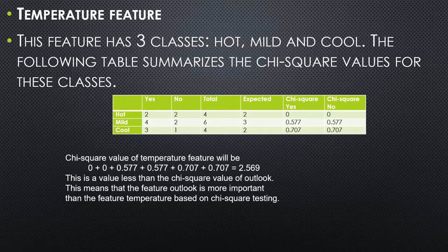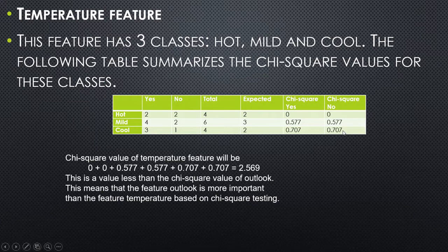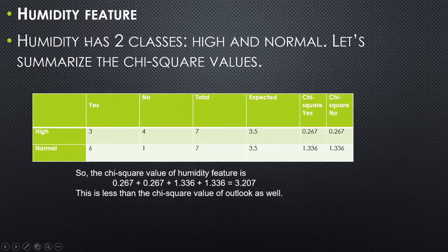Next, we compute the chi-square for the temperature feature, which has three classes: hot, mild, and cool. We count yes and no occurrences, find expected values, and compute chi-square yes and chi-square no. The summation for temperature comes to 2.569. For the humidity feature, which has two classes — high and normal — after computing chi-square yes and chi-square no, the total comes to 3.207.